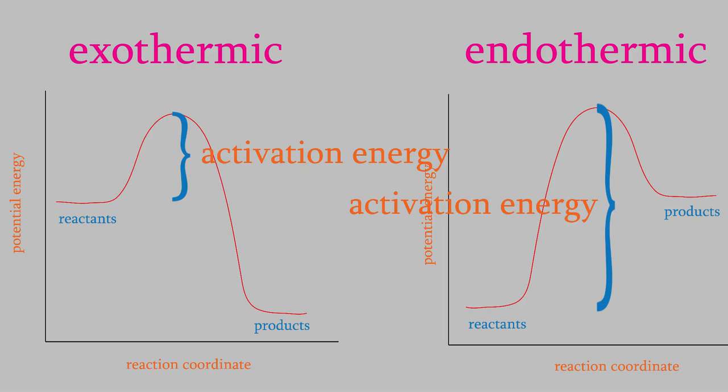But suppose our reactant molecules don't have enough energy to react when they collide. How can we give them more kinetic energy? As you might remember from our discussion of gas laws in General Chem 1, we can increase the kinetic energy by increasing the temperature. When we do that, it's more likely that the reactant molecules will overcome the activation energy barrier, so the rate of the chemical reaction will increase.